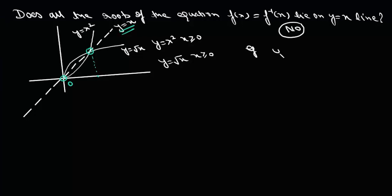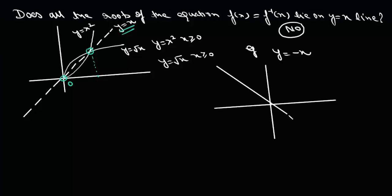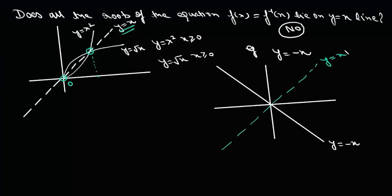For example, suppose we take y equals minus x. If we take the reflection about the y equals x line, it will be this line itself, and we know that the inverse of y equals minus x is y equals minus x itself. So all the points on this line are solutions to the equation f(x) equals f inverse of x.